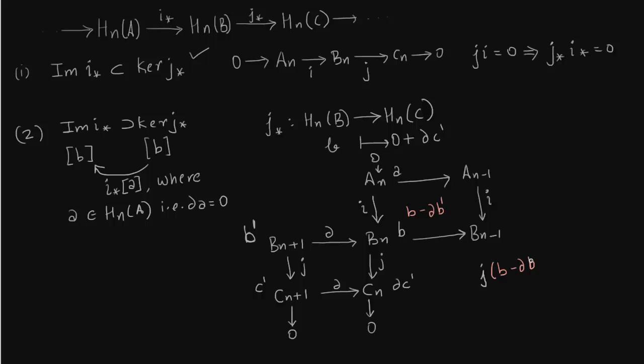So we need to find something like this element. So I am saying b - δb' where b' you see is taken from B_{n+1}, you apply delta to it you get δb'. So this is the standard trick. You always subtract δb', delta of previous image. So we say that this map goes to 0.